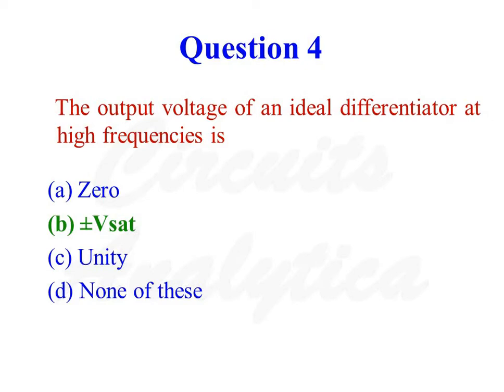At very high frequencies, capacitive reactance becomes 0. So the gain of an ideal differentiator at high frequencies is equal to minus Rf divided by Xc1, which approaches infinity as Xc1 becomes 0. So depending upon the polarity of the input signal, the output voltage will be either plus Vsat or minus Vsat. So the correct answer is plus or minus Vsat, second option.